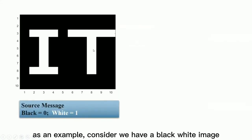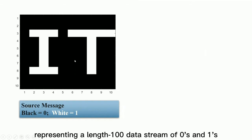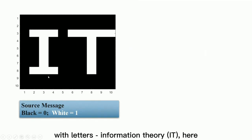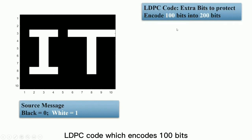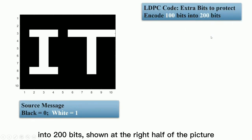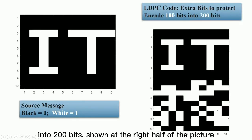As an example, consider we have a black-white image representing a dense 100 data stream of 0 and 1, with Netta's information theory IT here. We demonstrate a rate-half LDPC code which encodes 100 bits into 200 bits shown at the right half of the picture.